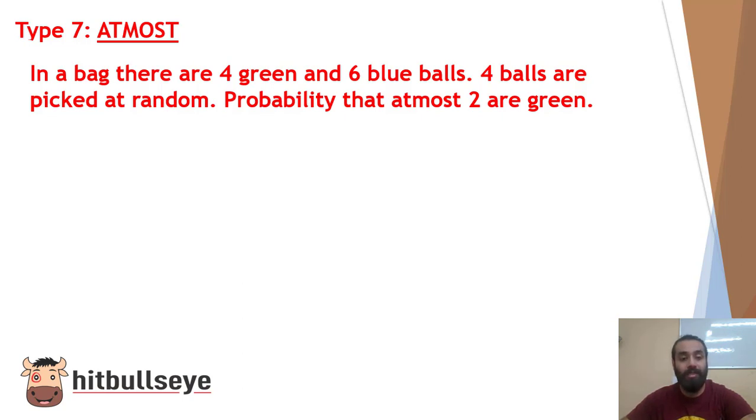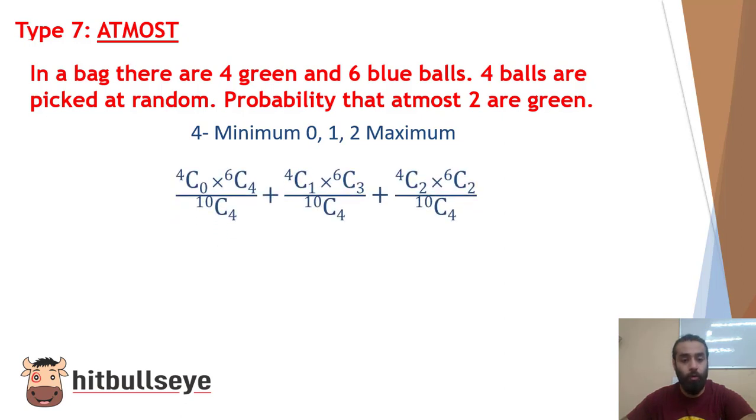So if we talk about this case, the lowest number we will pick would be 0. So 0, 1 and 2 will be the maximum that we can pick. So forming the same equation, 4C0 x 6C4. 0 we can go up to that number because we can pick all the blue balls. It is possible that we pick no green ball. So 0 is the first case.